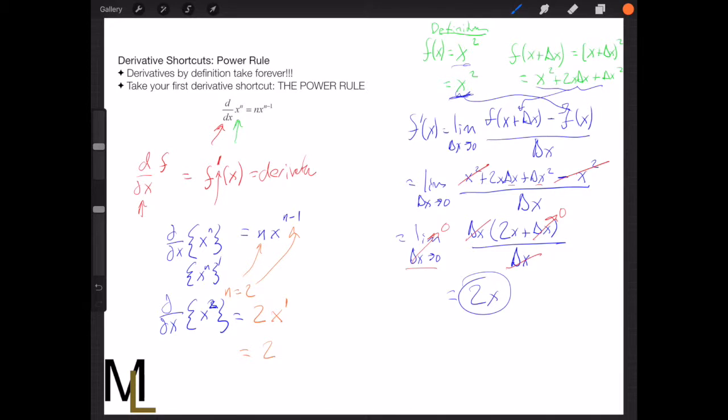So we get 2 times x to the first. Well, x to the first is just x. So we get 2x right there. And you can see these two are equivalent.